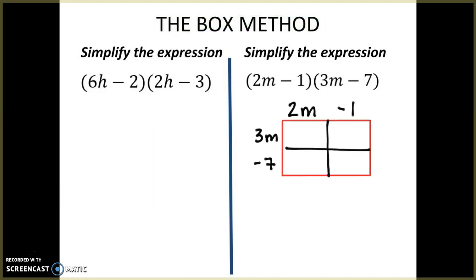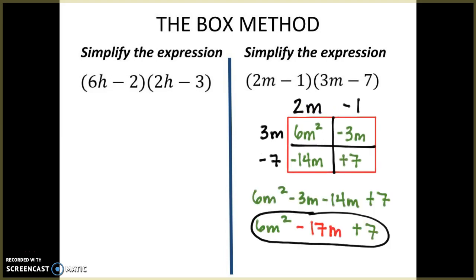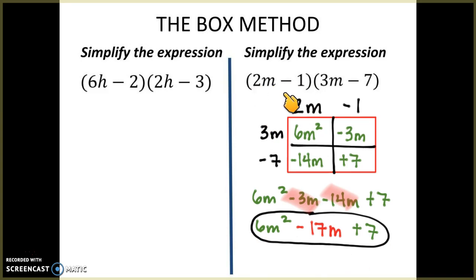For this practice problem, I've written 2m, minus 1, 3m, and minus 7 on the outside of the box. Multiplying: 3 times 2 is 6, m times m is m squared; 3 times negative 1 is negative 3m; negative 7 times 2 is negative 14m; negative 7 times negative 1 is positive 7. Writing all terms: 6m squared minus 3m minus 14m plus 7. Combining like terms gives negative 17m, so the final answer is 6m squared minus 17m plus 7.